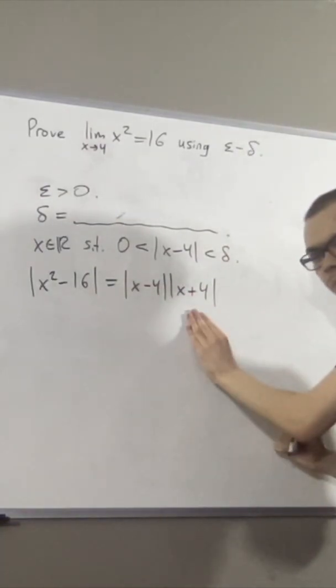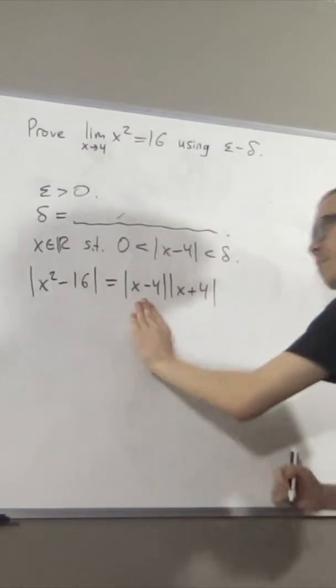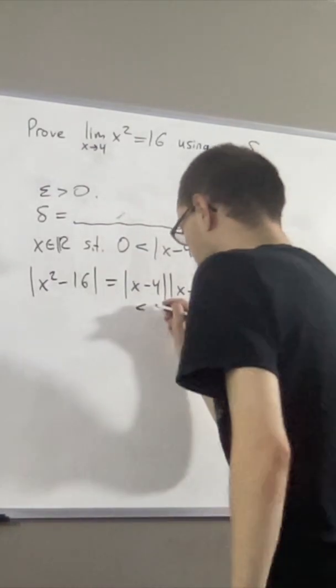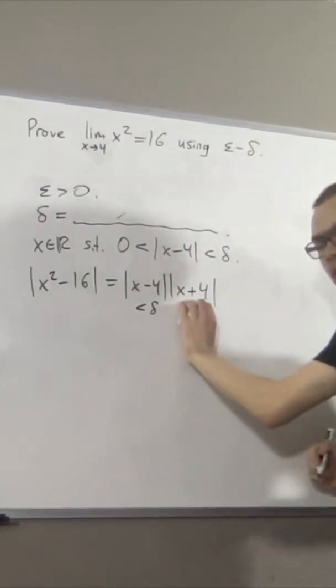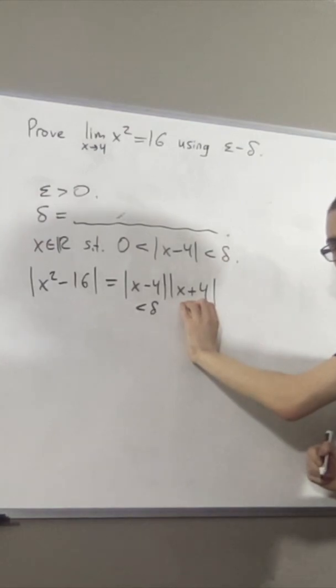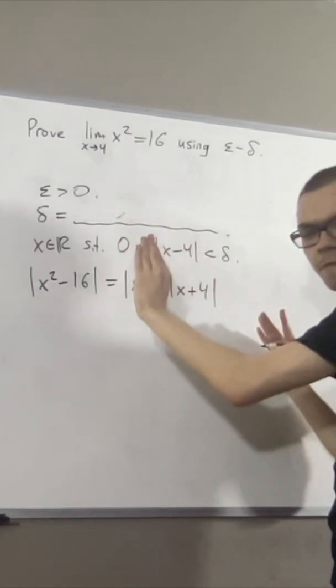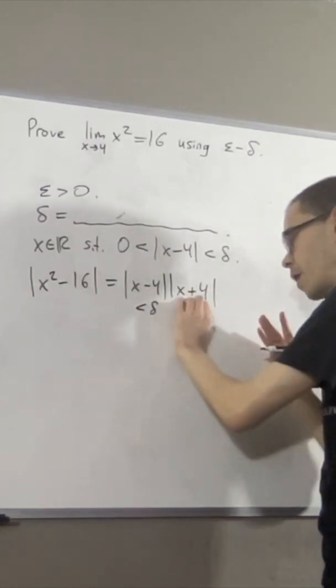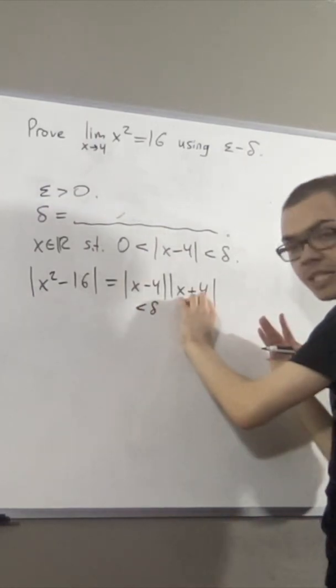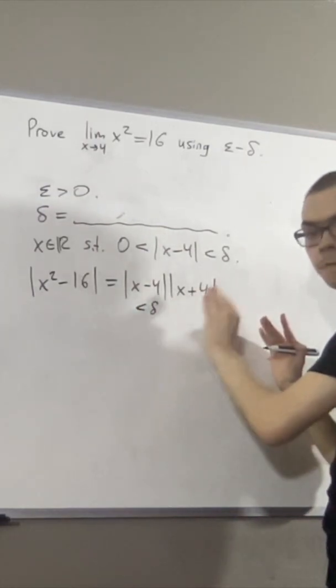So then what do we do from here? Well, we know that the absolute value of x minus 4 is less than delta, so then what do we do with the absolute value of x plus 4? The idea is we define delta small enough so that the absolute value of x plus 4 is less than some fixed positive quantity.